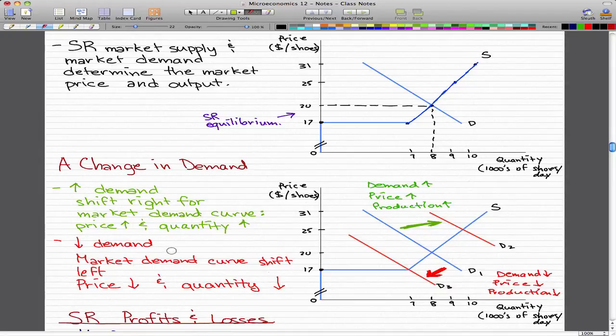Now the opposite happens when there's a decrease in demand. A decrease in demand will bring a leftward shift from D1 to D3. So in this case, the price will fall, and the production will also fall. Some producers will decide to stop making shoes or make less compared to what they were originally making in D1.